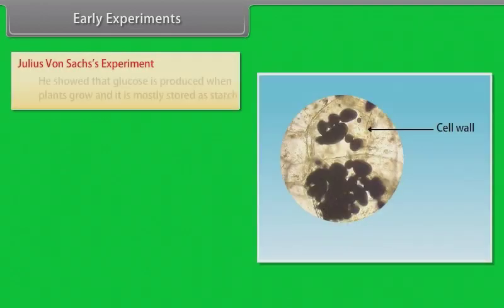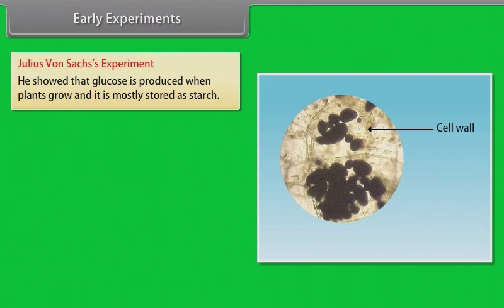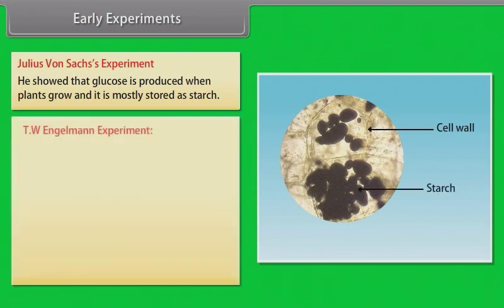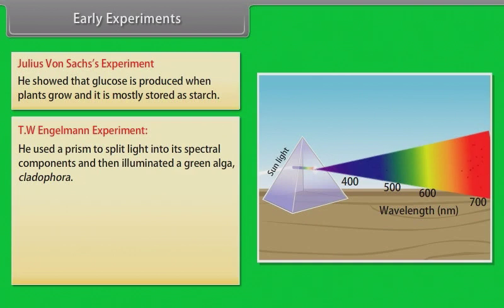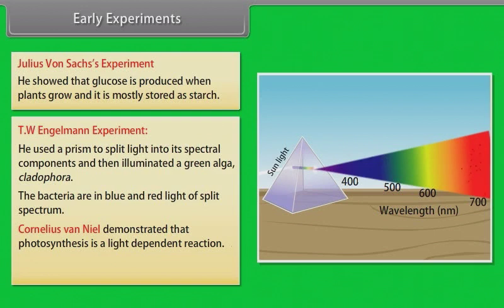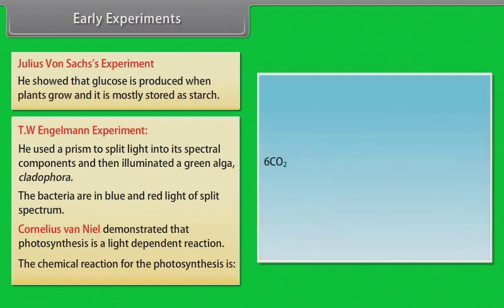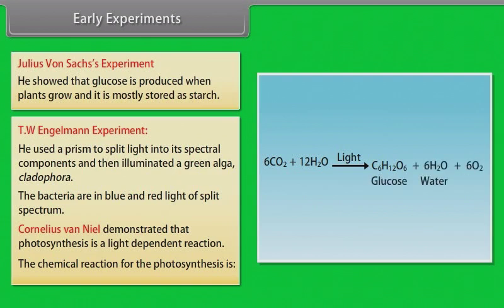Julius von Sartes showed that glucose is produced when plants grow and it is mostly stored as starch. T.W. Engelman used a prism to split light into its spectral components and illuminated a green alga, Cladophora. Bacteria accumulated in the blue and red light of the split spectrum. Cornelius van Neel demonstrated that photosynthesis is a light-dependent reaction. The chemical equation for photosynthesis is: 6CO2 + 12H2O, in the presence of light, gives C6H12O6 (glucose) + 6H2O + 6O2.